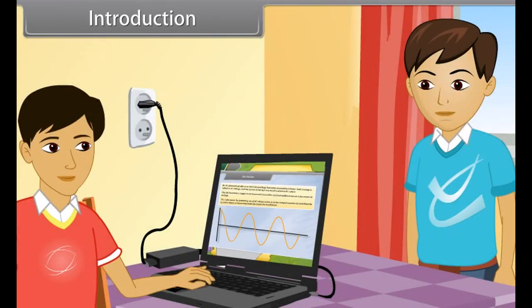A laptop works on D.C. voltage as it has a battery, and the laptop gets charged by plugging the charger into the A.C. voltage. My question is: how is it possible that a laptop works on A.C. voltage?